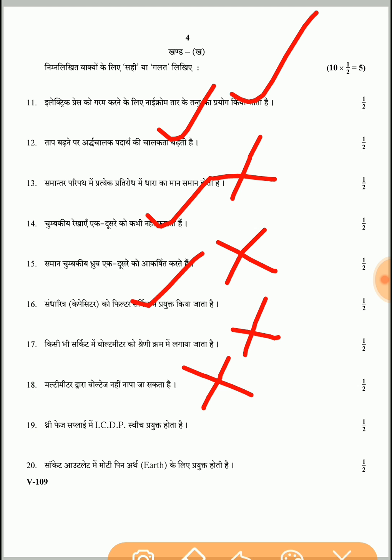Question 19: In a 3-phase supply, an ICDP switch is used — absolutely wrong, because an ICDP (Iron Clay Double Pole) switch is used in single-phase supply. Question 20: In a socket outlet, the largest pin is used for earth — absolutely correct.